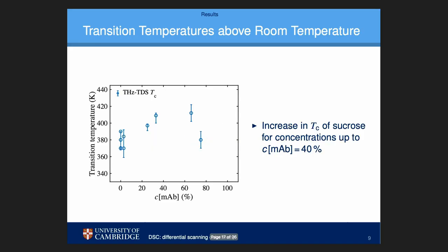To investigate, we measured our samples with varying concentrations of antibody and sucrose. Looking at a graph showing the crystallization temperature for different antibody concentrations, we can see that below 40% antibody, as you increase the concentration, your crystallization temperature actually also increases.